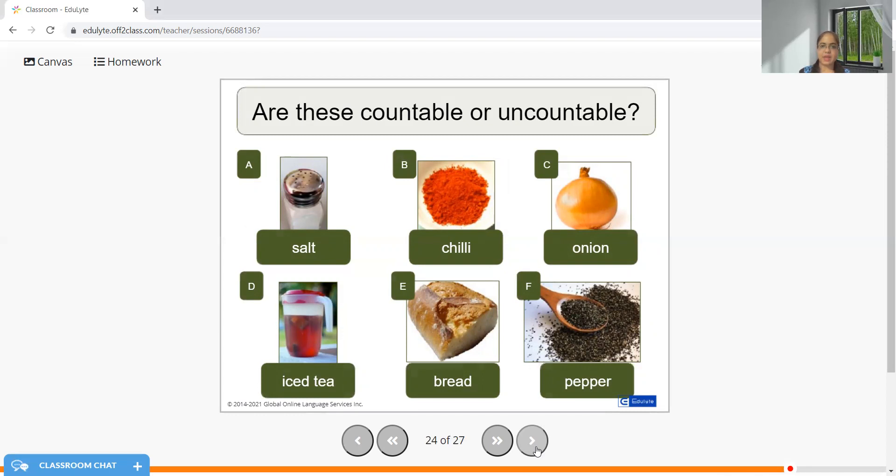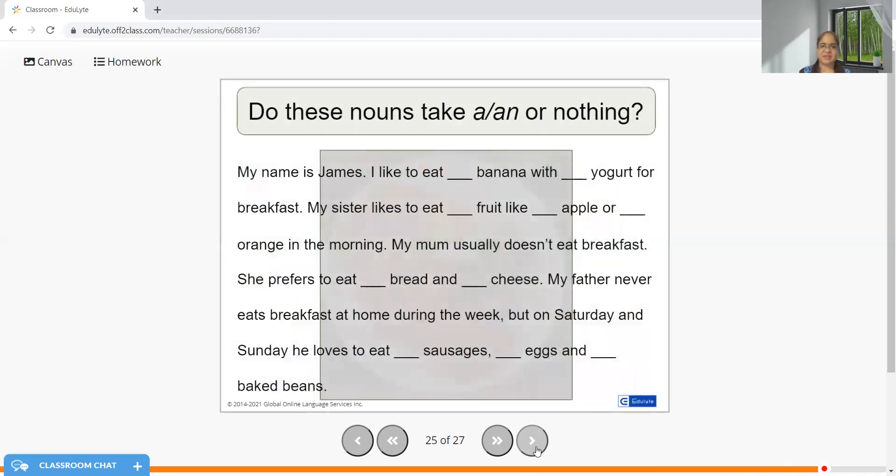Let's try to fill the articles together. My name is James. I like to eat a banana with yogurt for breakfast. My sister likes to eat a fruit like an apple or an orange in the morning. My mom usually does not eat breakfast. She prefers to eat a bread and cheese.